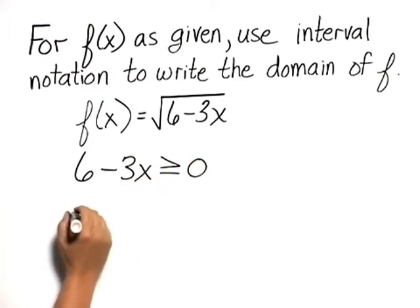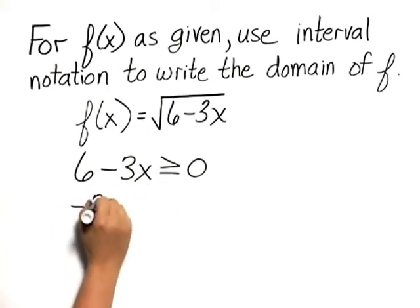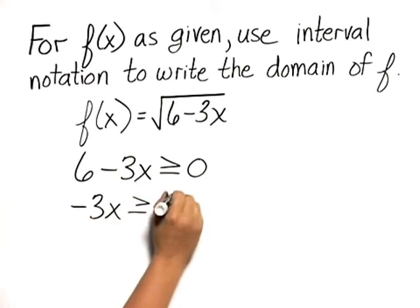To solve, we subtract 6 from both sides, and we get negative 3x is greater than or equal to negative 6.